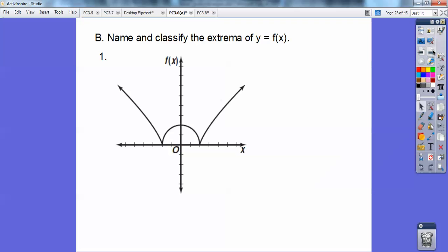So name and classify the extremas. So the extremas are: I have an absolute min right there, an absolute min right there, and I have a relative max right there because it goes up forever over here and forever on the other side. So there's the answer to that one.